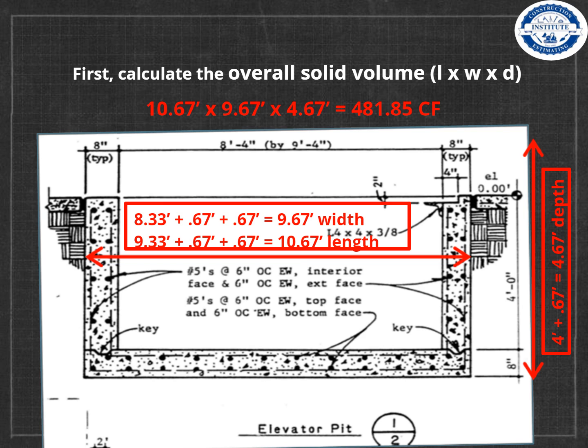So for the width, take the 8.33 feet interior dimension, plus the two walls (0.67 feet + 0.67 feet), giving you a total width of 9.67 feet.